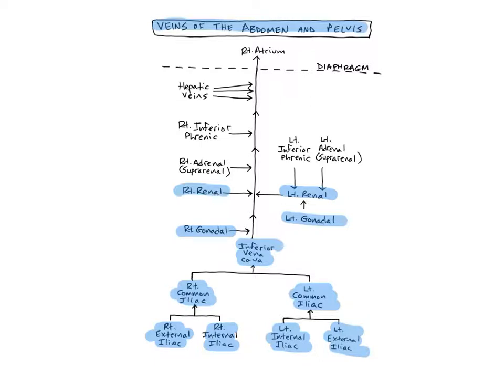The right adrenal vein drains blood from the right adrenal gland directly into the inferior vena cava. The adrenal glands are located superior to the kidney, which is what the name suprarenal refers to. The left adrenal vein drains blood from the left adrenal gland into the left renal vein.